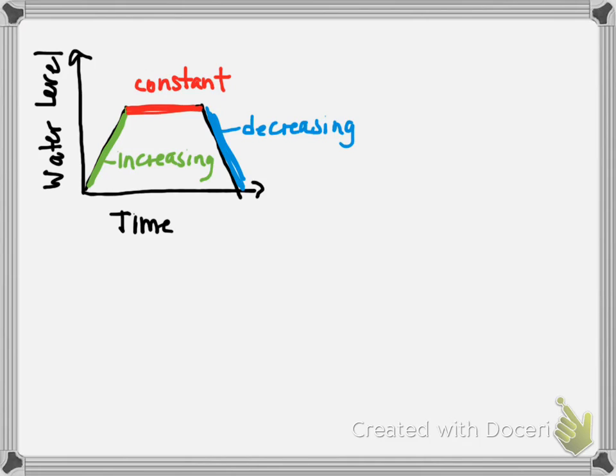What you wouldn't say as your story is things increase then stay constant then decrease. We need to put it in context. Remember our labels. We have water level over time. So what I'm noticing is that the water level is rising or increasing, and then it stays the same for a while and then it decreases.